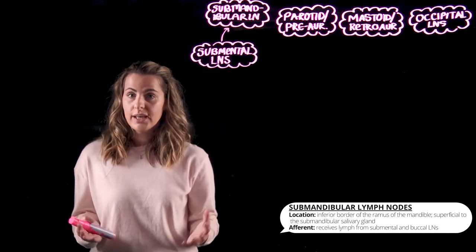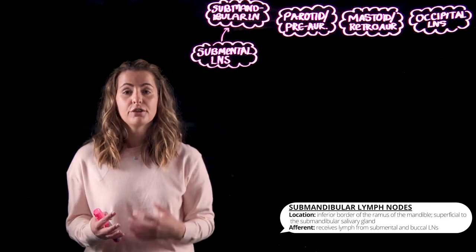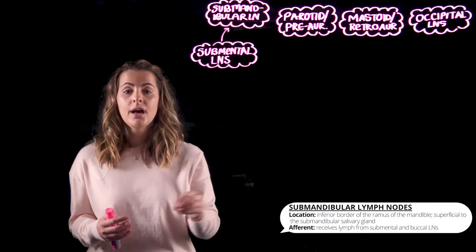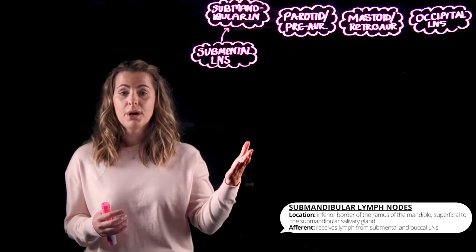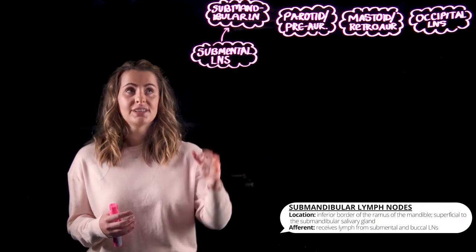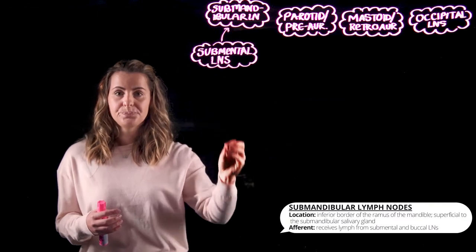Also located in the face are the facial lymph nodes, which won't be drawn on this diagram. The facial lymph nodes, similar to the submental lymph nodes, will eventually drain back to the submandibular nodes. All of these groups within our pericervical collar will then drain into the deep cervical lymph nodes.